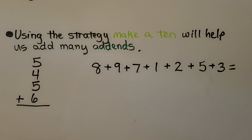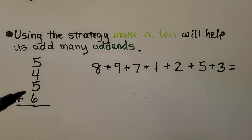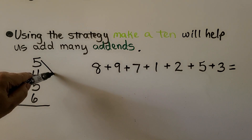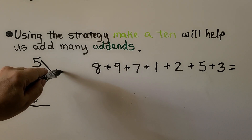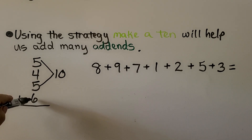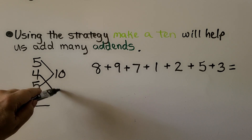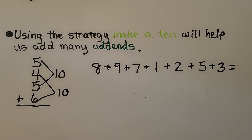Using the make-a-ten strategy will help us add many addends. Here we have five plus four plus five plus six. If we make a ten with the five plus five — that's a doubles fact — and we see that four and six make a ten, we just have ten plus ten, which is easy. That's twenty.